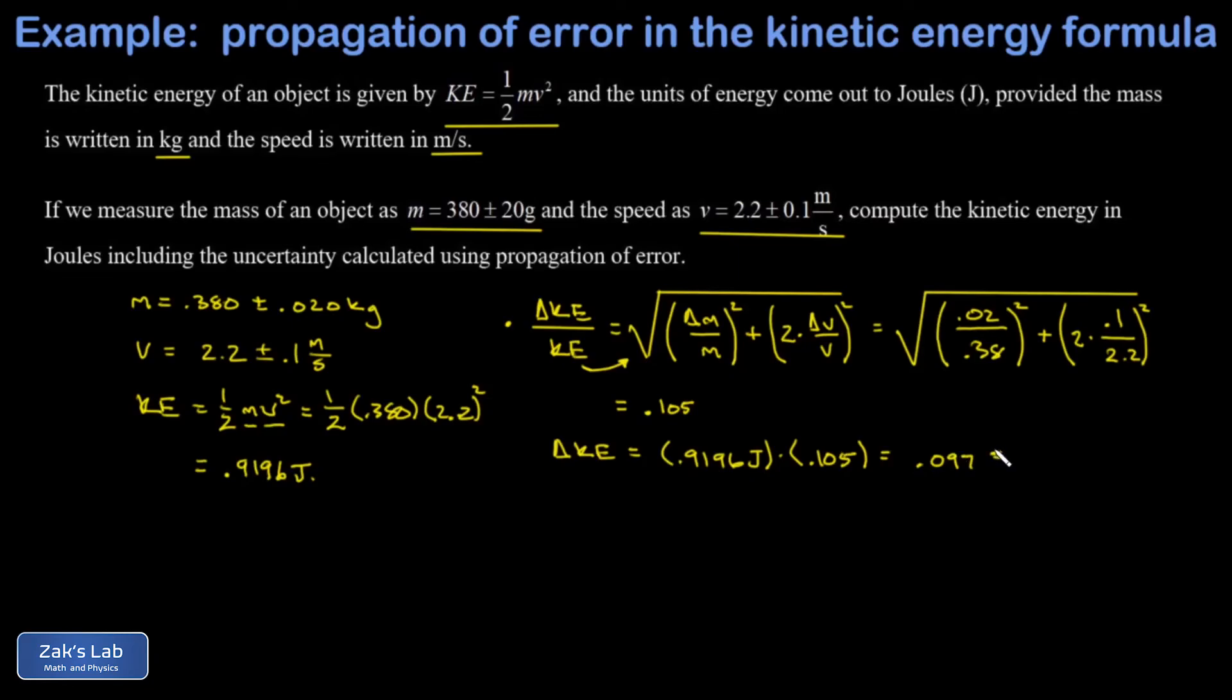We usually follow a convention of rounding the uncertainty to one significant digit, and that means I have to round up into the tenths place and get 0.1. So there's an uncertainty of 0.1 joules.